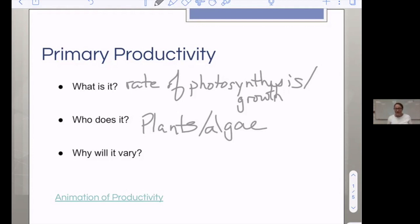Why will it vary? Think about what things affect photosynthesis. If we have changes in light, if we have changes in temperature, we can change the rate of photosynthesis. And if we change the amount of inputs we have, so like CO2, we can also change the rate of photosynthesis.